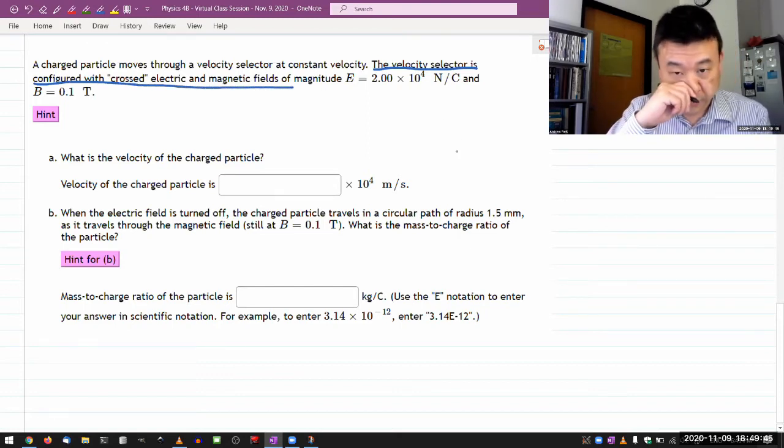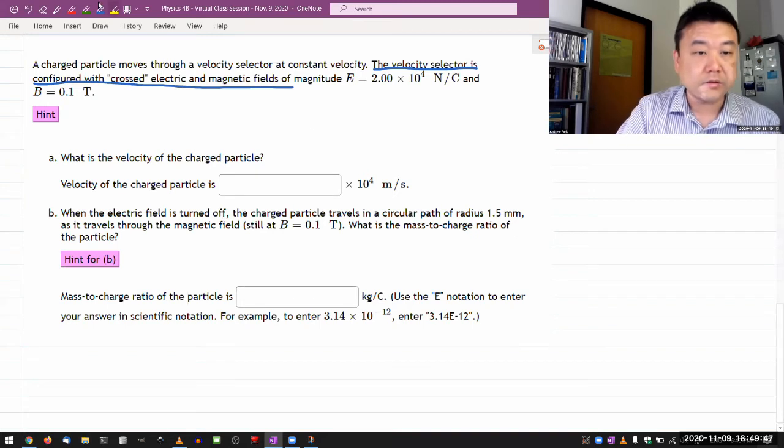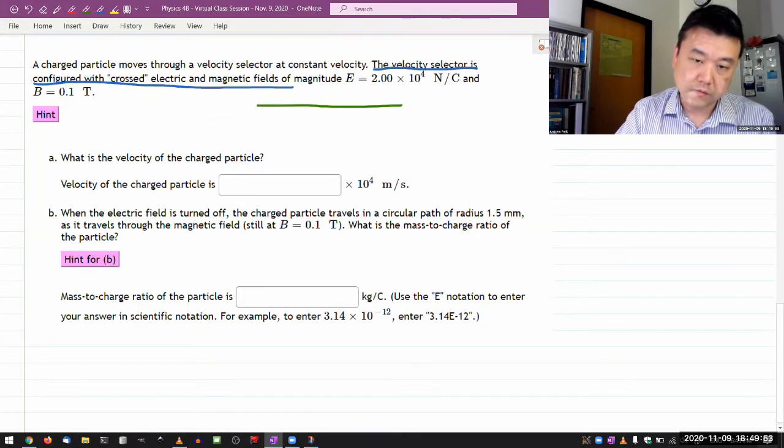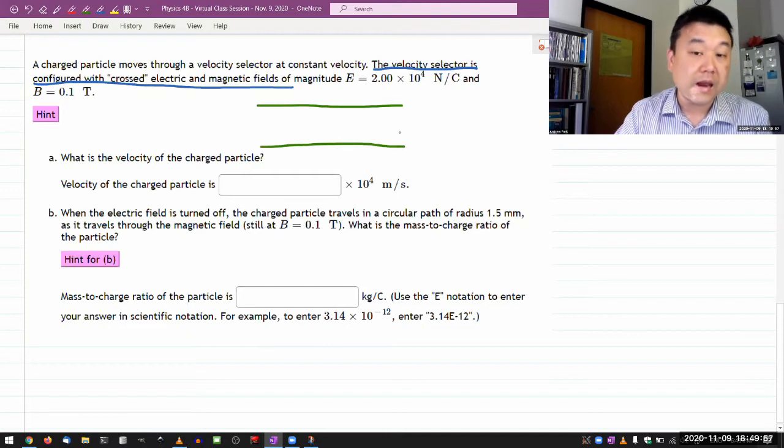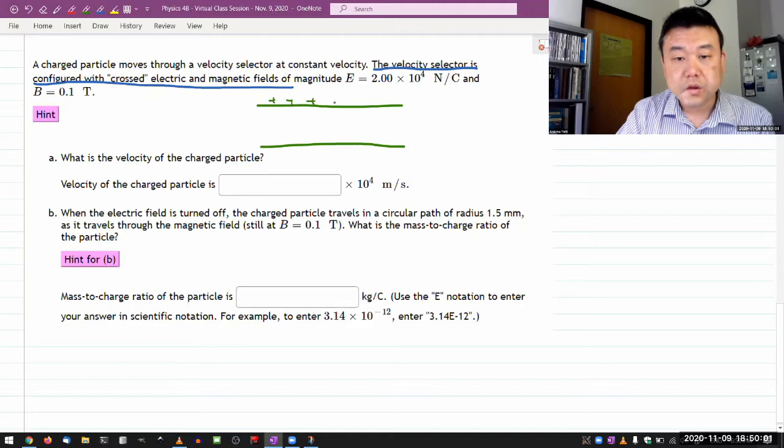So let me draw a version of a velocity selector. You could build a velocity selector this way. It's a combination of a capacitor, or something that produces a uniform electric field. So the charges actually don't matter.